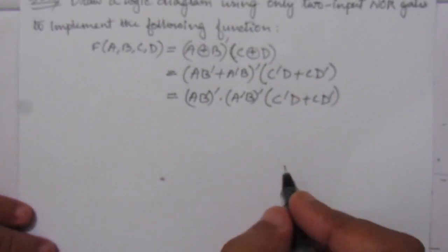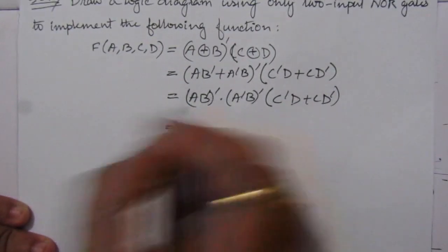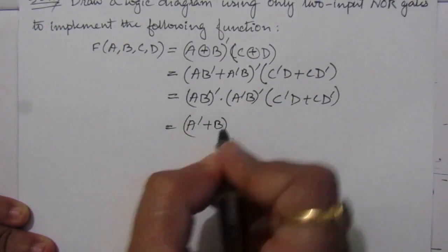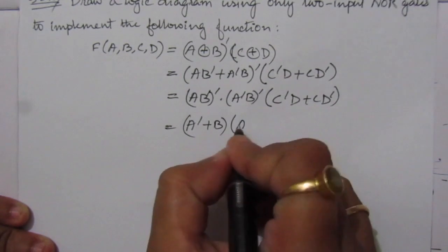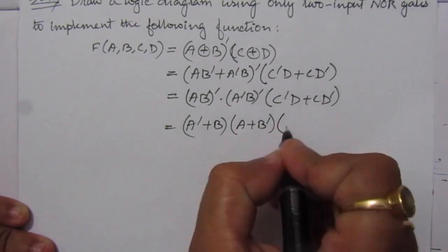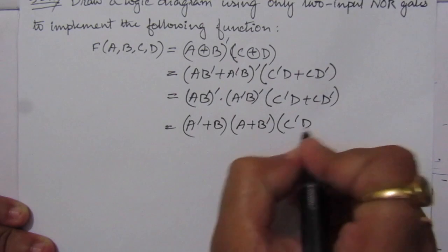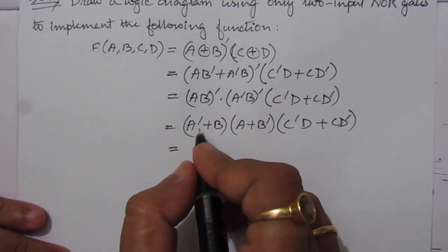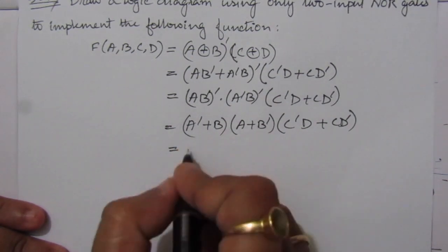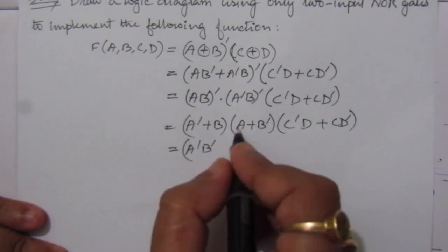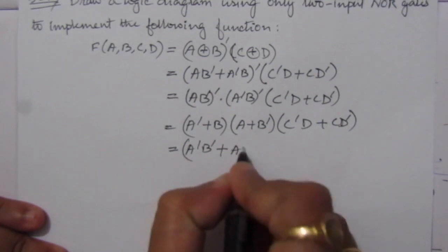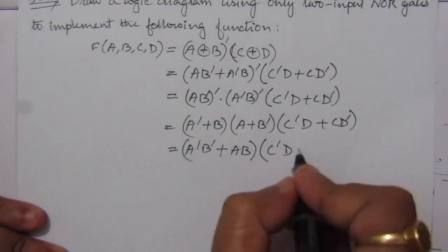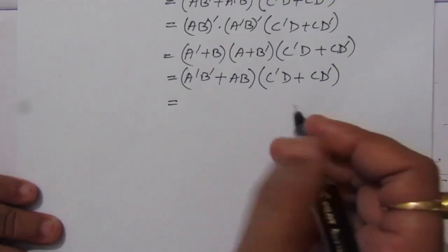This can be again simplified. (A·B̄) complement becomes (Ā + B), and (Ā·B) complement becomes (A + B̄). Multiplying these together: A·Ā = 0, so those terms vanish. We get Ā·B̄ and A·B remaining, then multiplied by (C̄·D + C·D̄).